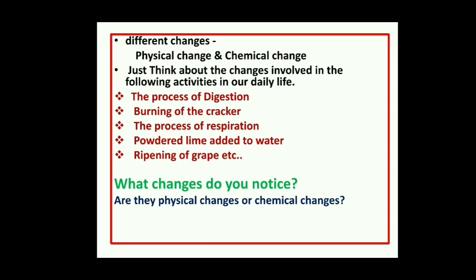According to these activities, what changes do you notice? Are they physical changes or chemical changes? Are they temporary changes or permanent changes? If you observe all of the above processes, the nature of the original substance would be changed. If new substances are formed with properties completely unlike those of the original substances, we say that a chemical change has taken place.